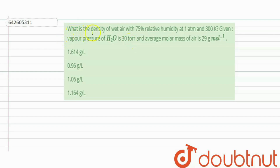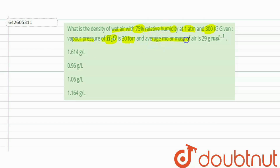The question is: what is the density of wet air with 75% relative humidity at one atmospheric pressure and 300 Kelvin? Given: vapor pressure of water is 30 torr, and the average molar mass of air is 29 grams per mole.